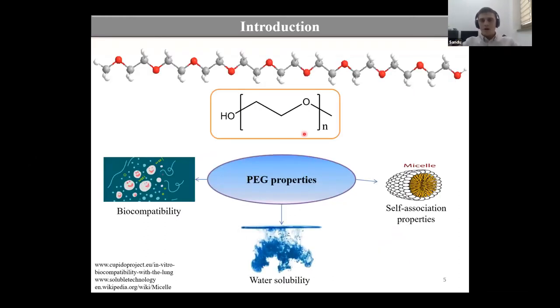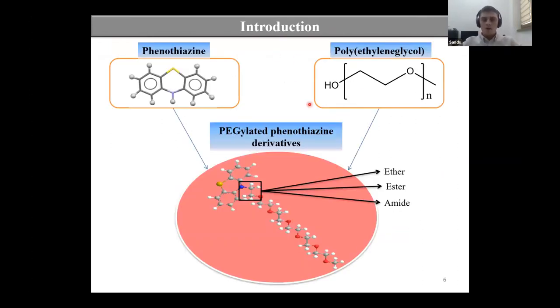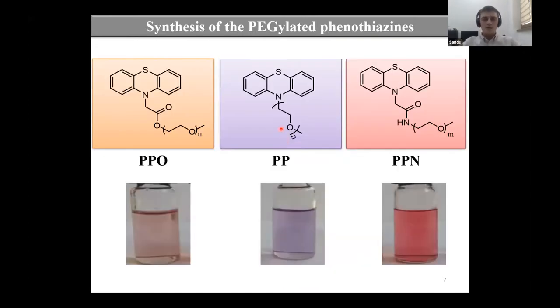Polyethylene glycol is a biocompatible FDA-approved synthetic polymer which is used for new drug formulations. This polymer has high water solubility and the ability to self-assembly, and the aim of our work was to combine these two compounds to obtain the pegylated phenothiazine derivatives. We obtained three of them by coupling phenothiazine core to polyethylene glycol through different functional groups as ether, ester, and amide. Here you can see those three compounds we synthesized and their water solutions.